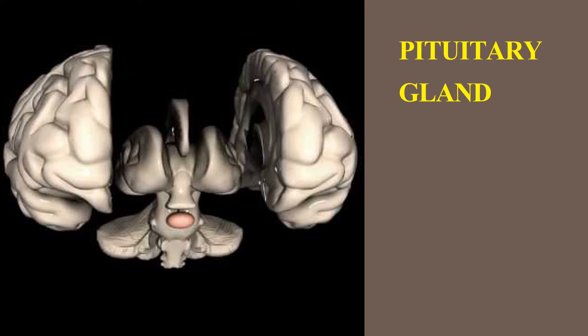Hello friends, welcome to EC Embryology to Gross Anatomy channel. Today we are going to see about the Gross Anatomy of the Pituitary Gland. The pituitary gland is also called the hypophyseal gland. It is a very small endocrine gland.